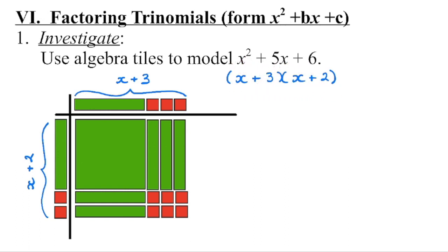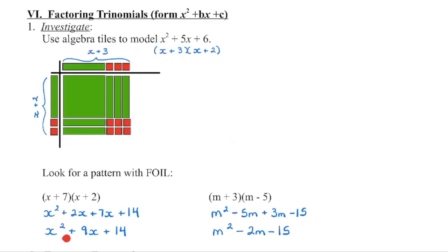Multiplying these together will give us that trinomial. Now we will be given a trinomial and asked to factor it — create those brackets. But let's try looking at the opposite process for a second in order to figure out where some of these numbers are coming from. So if I start with the factors and we multiply this out, a binomial times a binomial will get foiled.